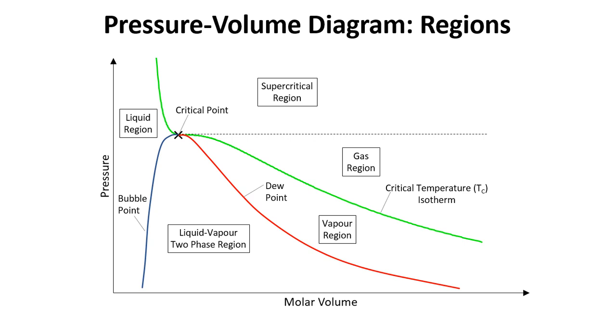So to start with the pressure volume diagram has different regions. For example we have a liquid vapour region here where there's the coexistence of liquid and vapour. And that is encapsulated between the dew point line and the bubble point line here. Then nestled in between the dew point line and the critical temperature isotherm we have the vapour region. So this is where our substance is in the gas phase but it's below the critical temperature.